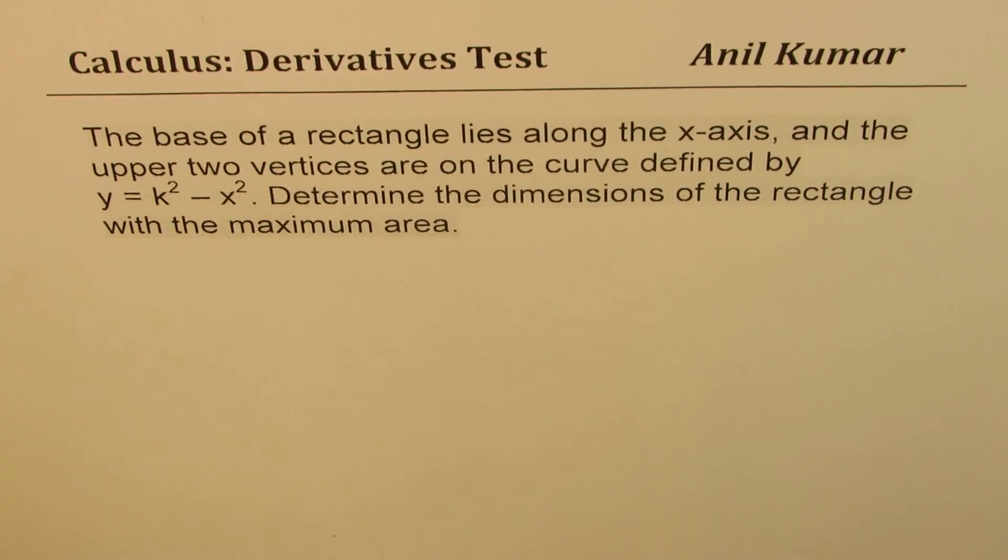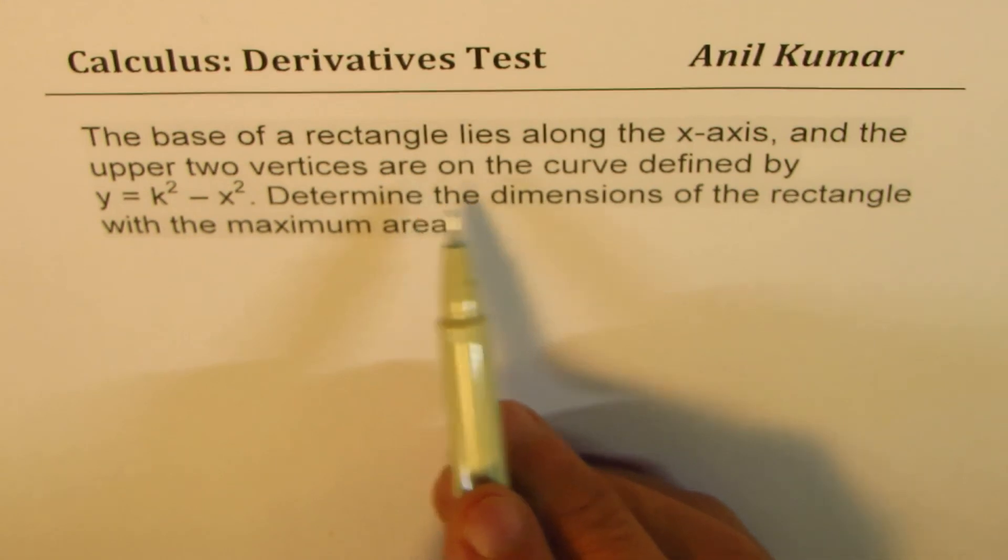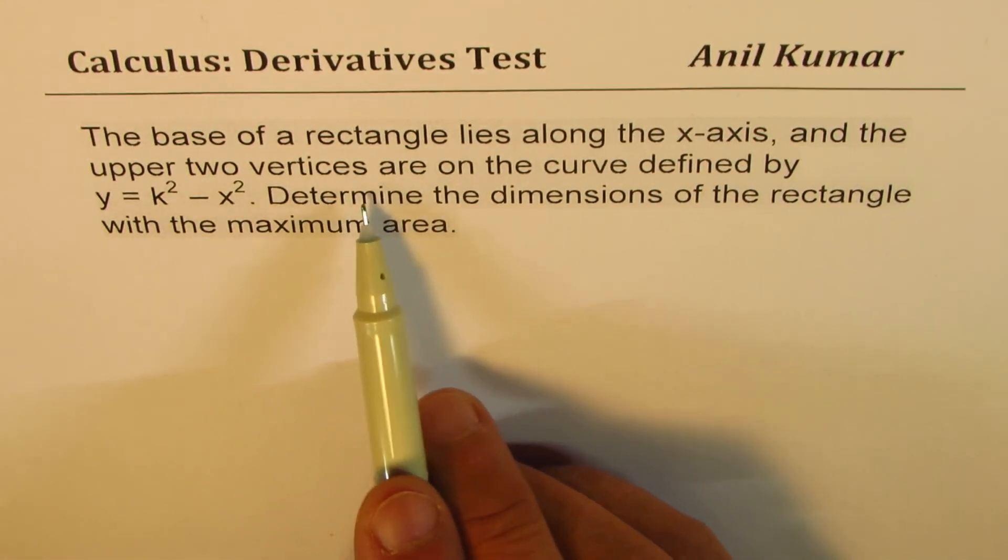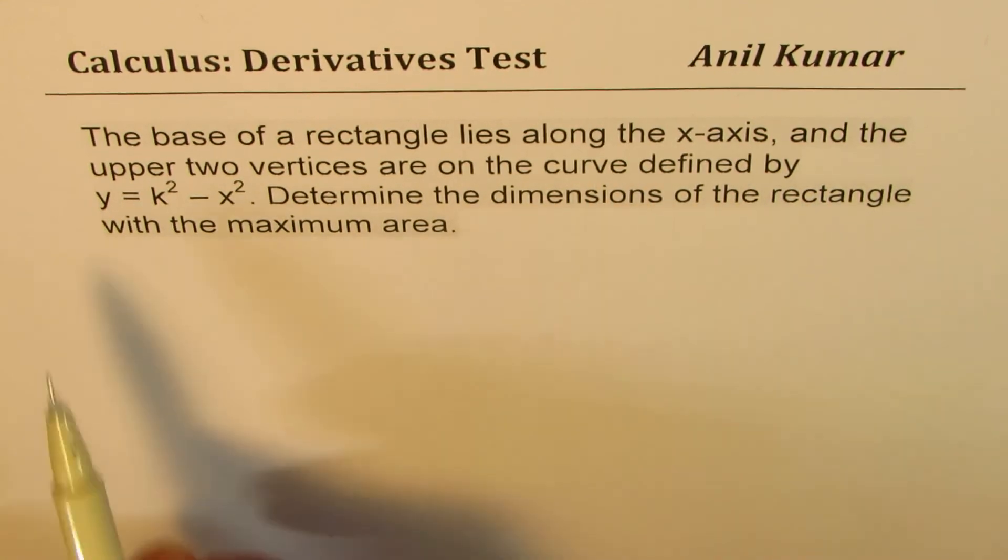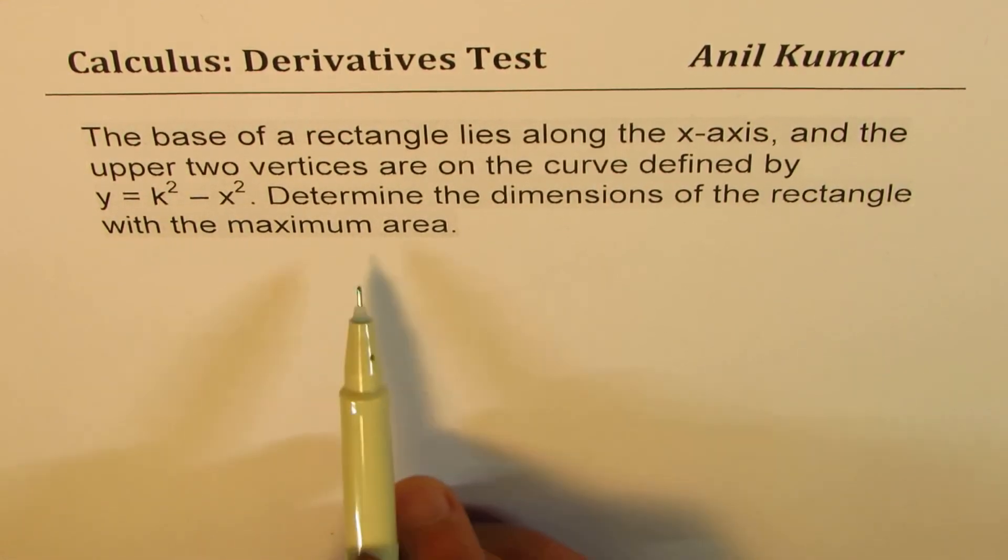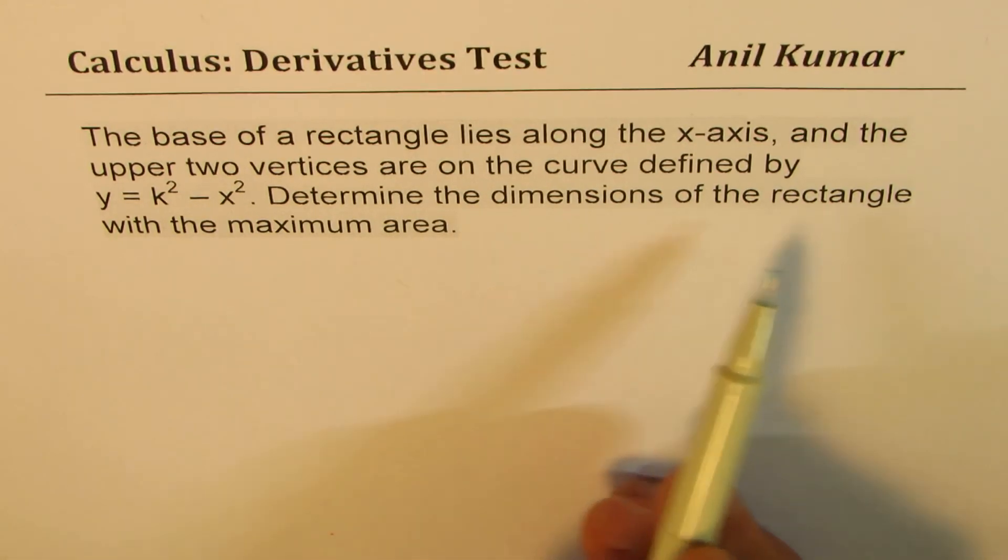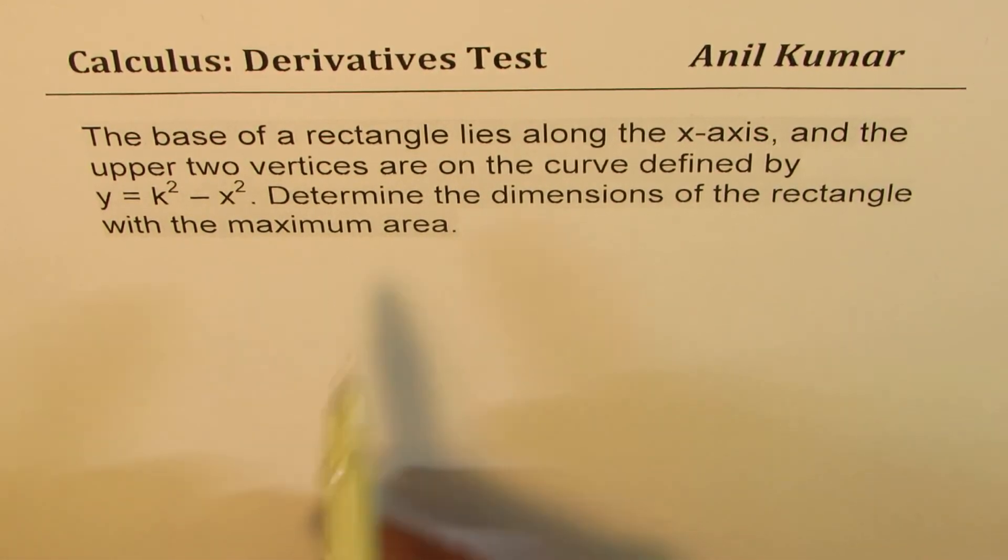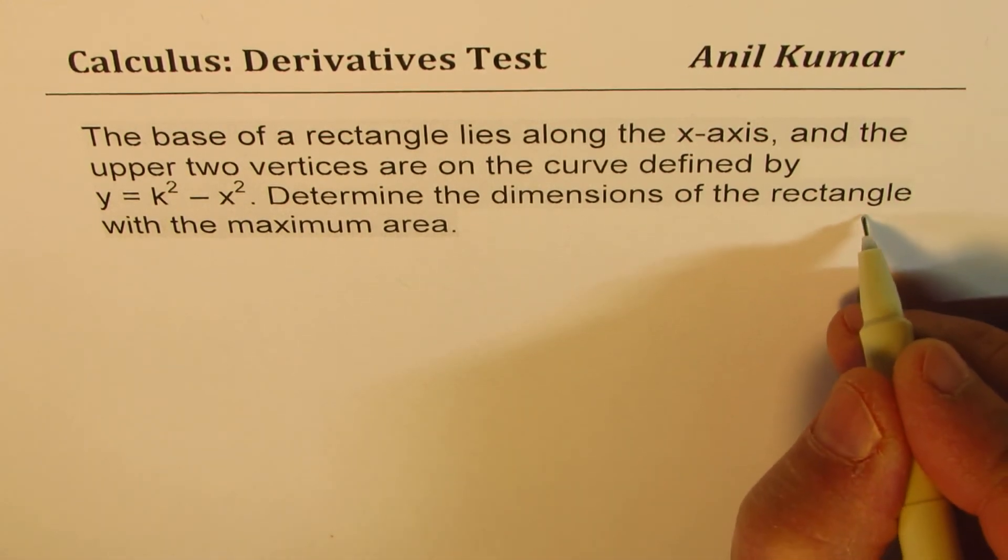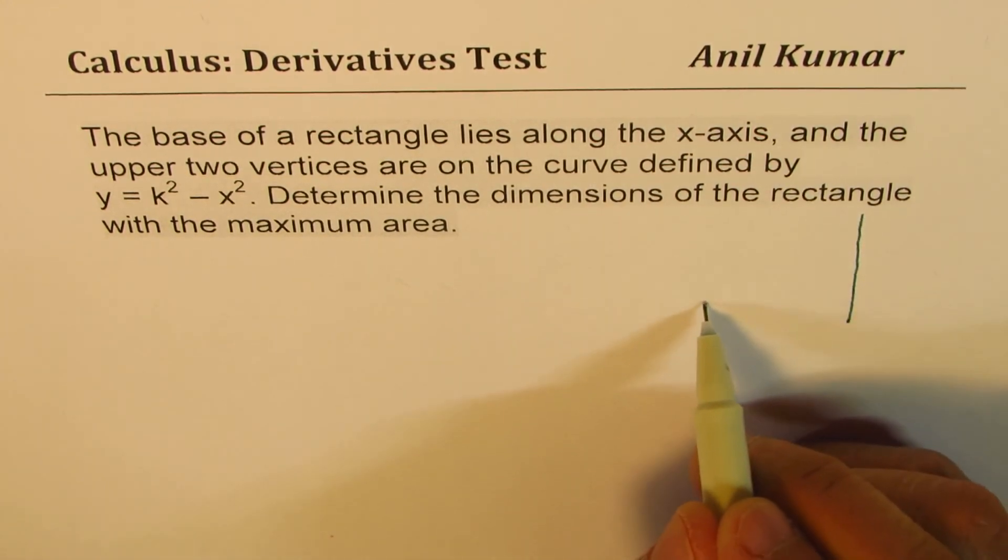I'm Anil Kumar, sharing with you previous test questions on derivatives. The question here is: the base of a rectangle lies along the x-axis, and the upper two vertices are on the curve defined by y equals k squared minus x squared. Determine the dimensions of the rectangle with maximum area. You can always pause the video, answer the question, and then look into my suggestions.